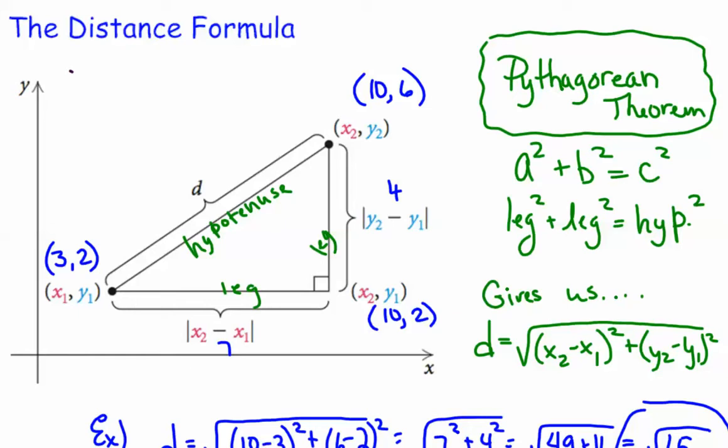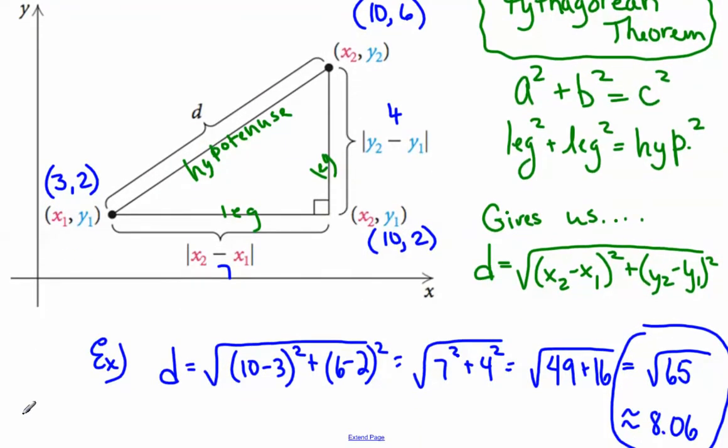Okay, so let's apply that to a specific case because that's really what we're going to be doing. If I have the ordered pairs 3, 2, and 10, 6, and I want to know what's the distance, I'm going to take the square root, and then I'm going to take the difference in my x's, 10 minus 3, and square it. Then I'm going to take the difference in my y's, the 6 minus 2, and square it.